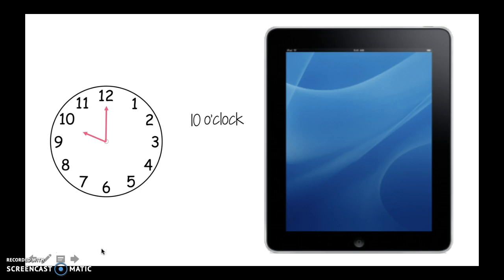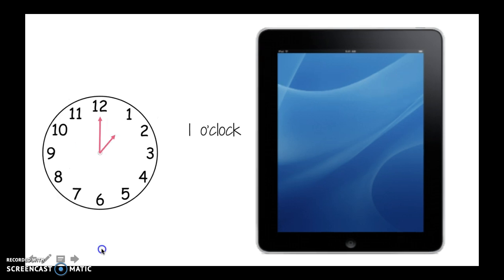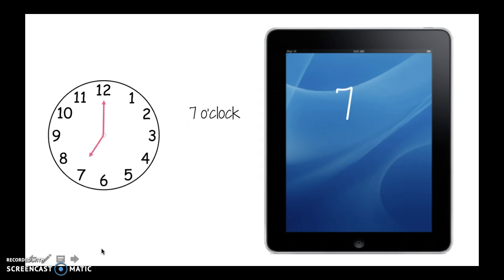All right, if my analog clock, which is the one that has the numbers on it in a circle, if that says ten o'clock, then my iPad would say ten, and then the o'clock would be with the two dots in the middle, and then zero, zero. All right, if my time on the analog clock was one o'clock, what would my iPad say? Yep, it's say one, and then how do I show the o'clock? You're right, dot, dot, zero, zero. What about seven o'clock? I would say seven, and then what would come next? You're right, dot, dot, zero, zero.